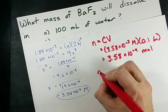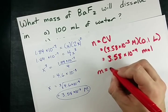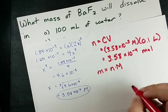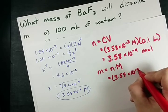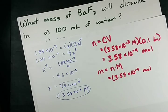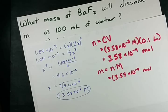Now, I just have to convert that to mass, which is my number of moles times my molar mass. 3.58 times 10 to the negative 4 moles. And now I need the molar mass of BaF2.